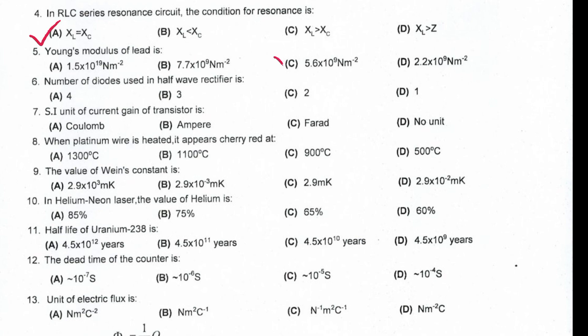Young's modulus of lead is 5.6 multiplied by 10 to the power 9 Nm per square. Number of diodes used in half-wave rectifier is 1.